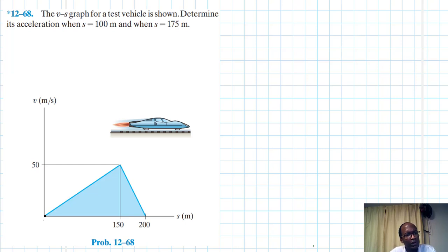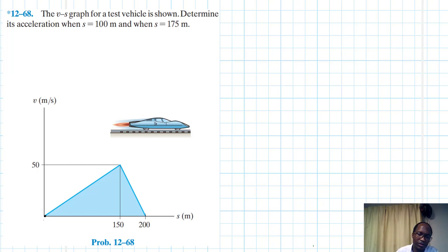The velocity-position graph for a test vehicle is shown. Determine its acceleration when s is equal to 100 meters and when s is equal to 175 meters. This problem is from Engineering Mechanics Dynamics, 14th edition, by R.C. Hibbeler.